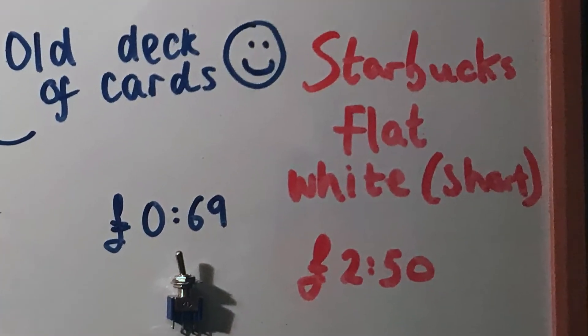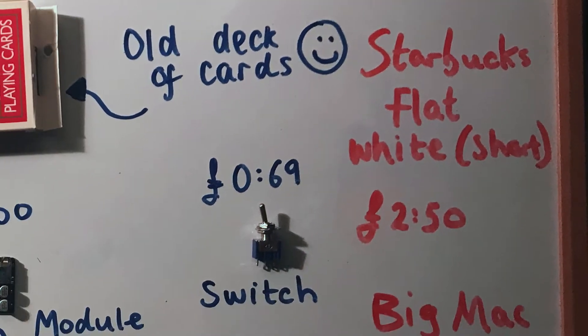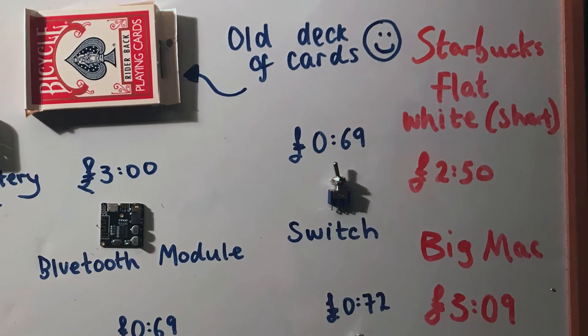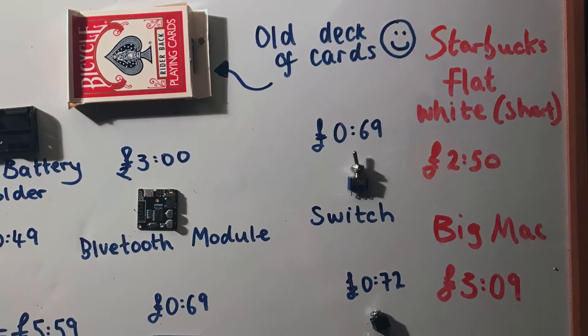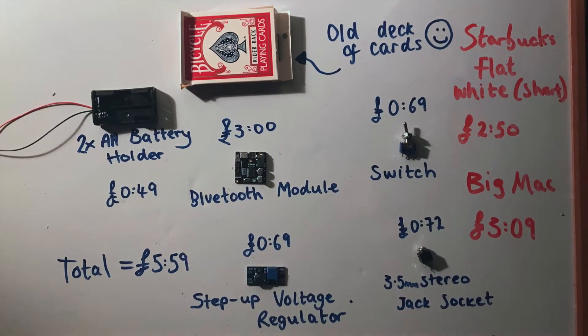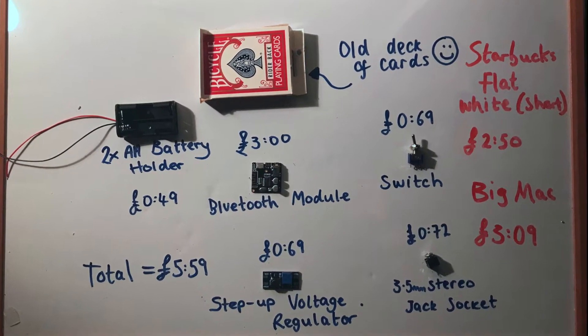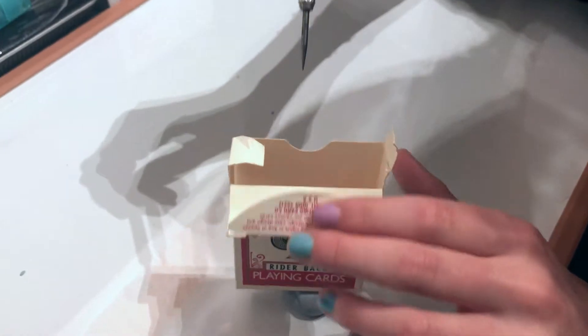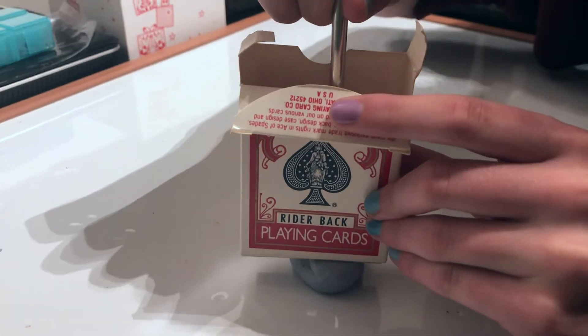This all totaled to £5.59. And just for comparison, a Starbucks flat white at the moment in the UK costs £2.50 and a Big Mac costs £3.09. I've just realized that a Starbucks flat white and a Big Mac adds up exactly to our total of these items, which is pretty cool. The first thing we did was get our old deck of cards, put it on some BluTack and then I just punched a hole in it, as central as possible and just towards one side.